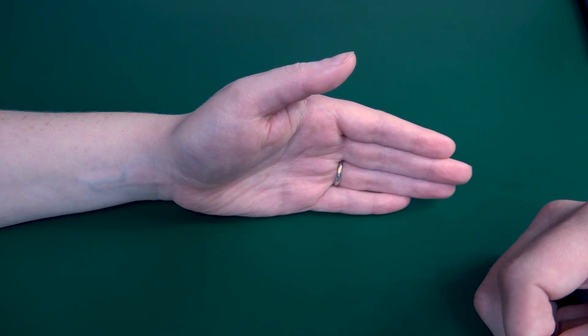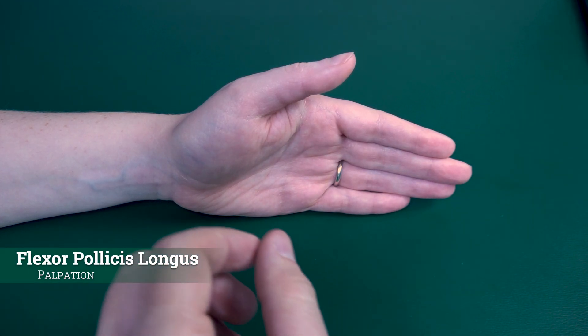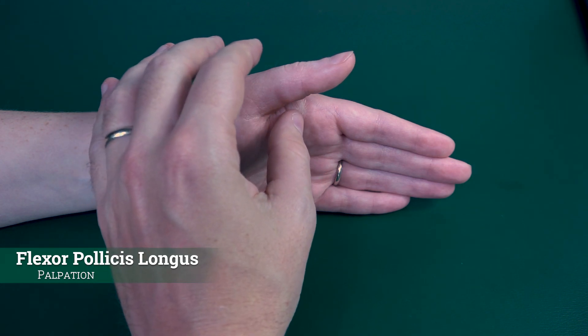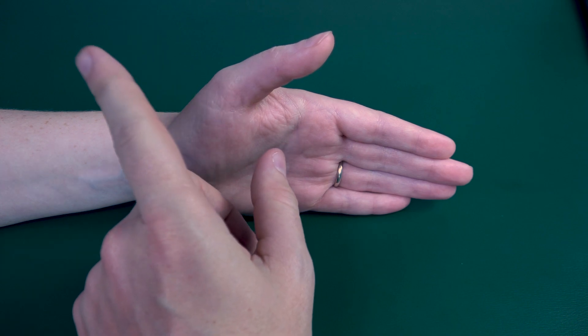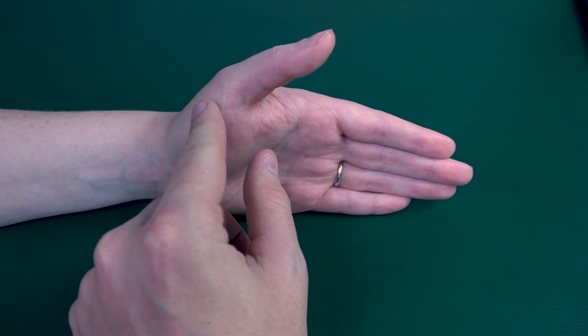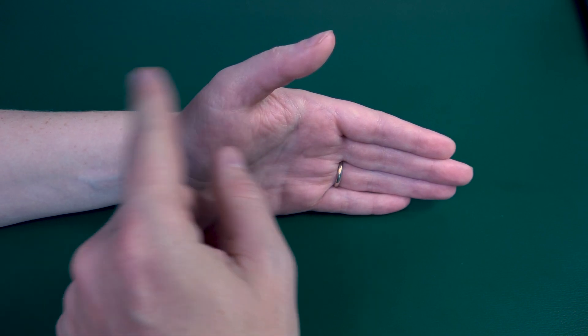If there is minimal movement, then you will palpate for the flexor pollicis longus tendon. Now why I'm palpating for the tendon movement is because if you remember your anatomy, the muscle belly of this muscle is all the way in the forearm.